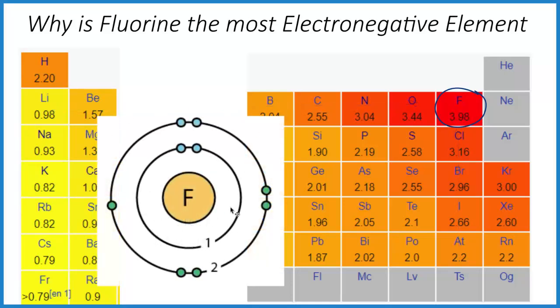Fluorine is a fairly small element. As we go down the group, they get larger because we're adding energy levels each time we go down one on the periodic table here. So fluorine is pretty small. That means these valence electrons here, they're pulled towards that positive nucleus because they're closer.